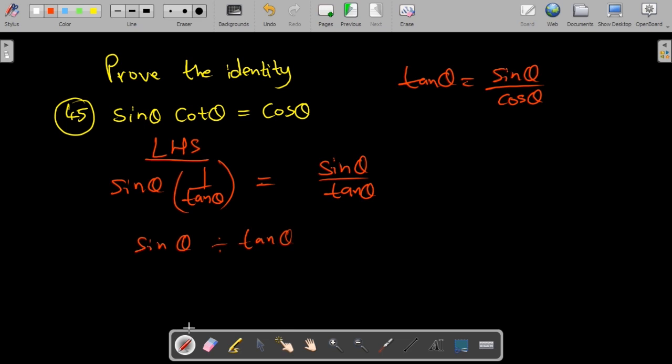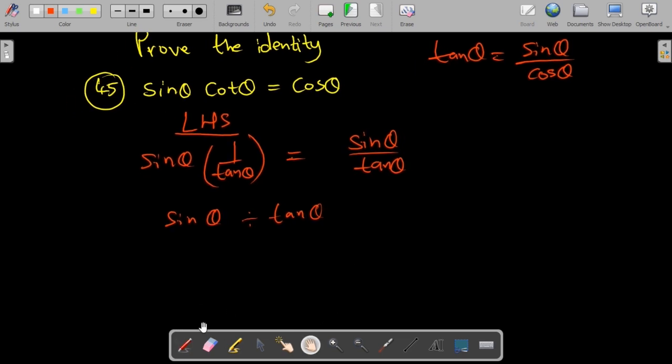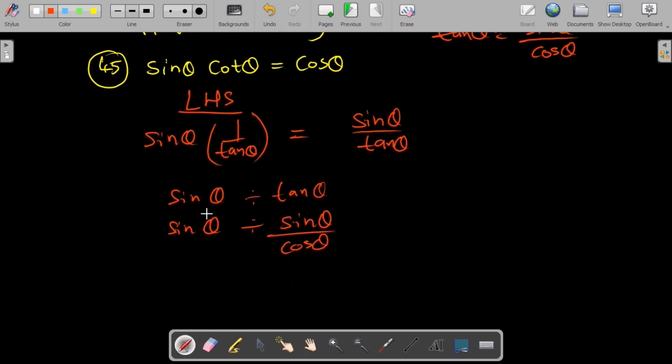If we change this to the identity, it's equivalent to sine divided by sine theta over cosine of theta. Remember that when you divide, it's the same as multiplying by the reciprocal, which means these two are equivalent.